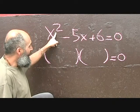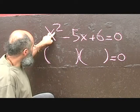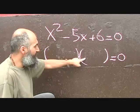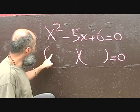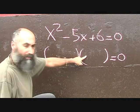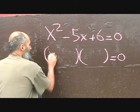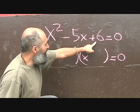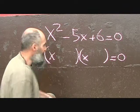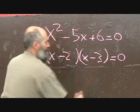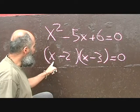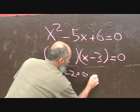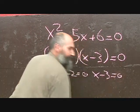Those are your numbers. You break x squared into x and x — since it's x squared, not x to the power of 4. What we figured out is negative 2 times negative 3. Then you set each factor equal to 0: x minus 2 equals 0, and x minus 3 equals 0.